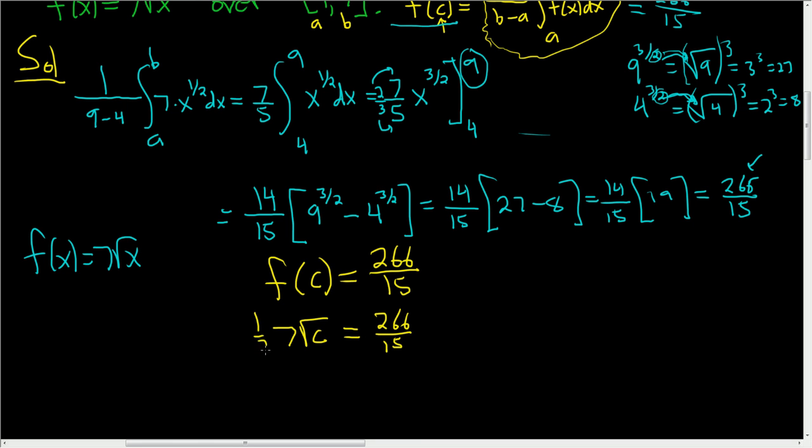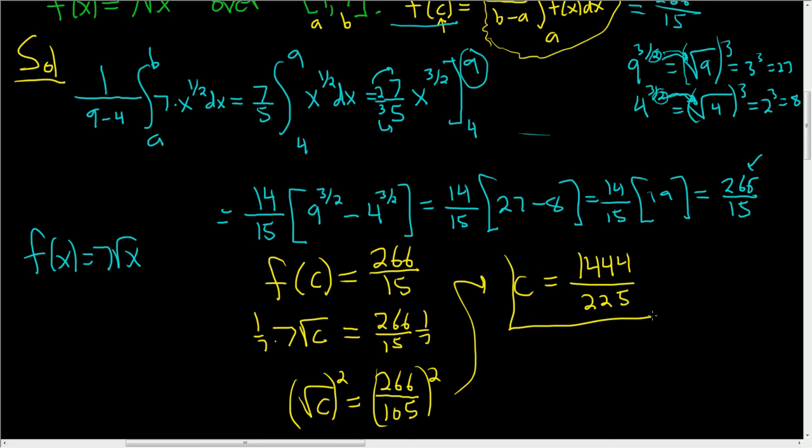So multiply by 1 seventh. So this is the square root of C equals 266 over 105. And then to find C, you simply square both of these guys. So C is equal to, cheating again using a calculator here. This ends up being 1444 over 225. And that is the correct answer. So that is the value of C guaranteed by the mean value theorem.